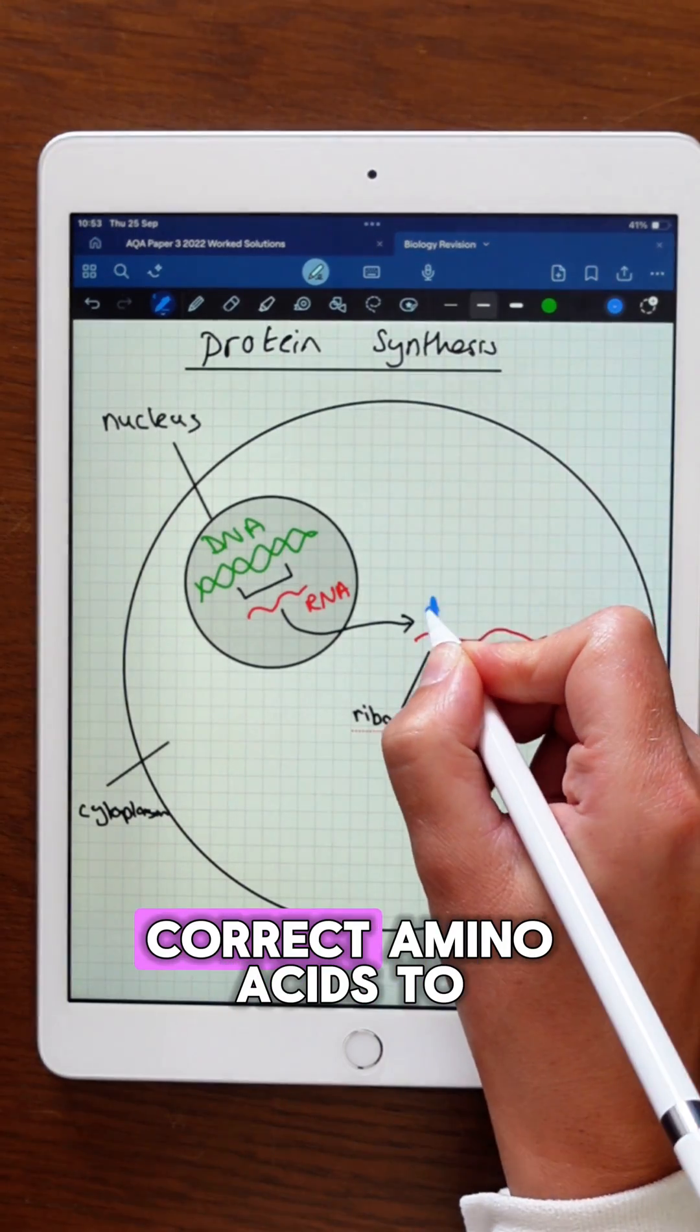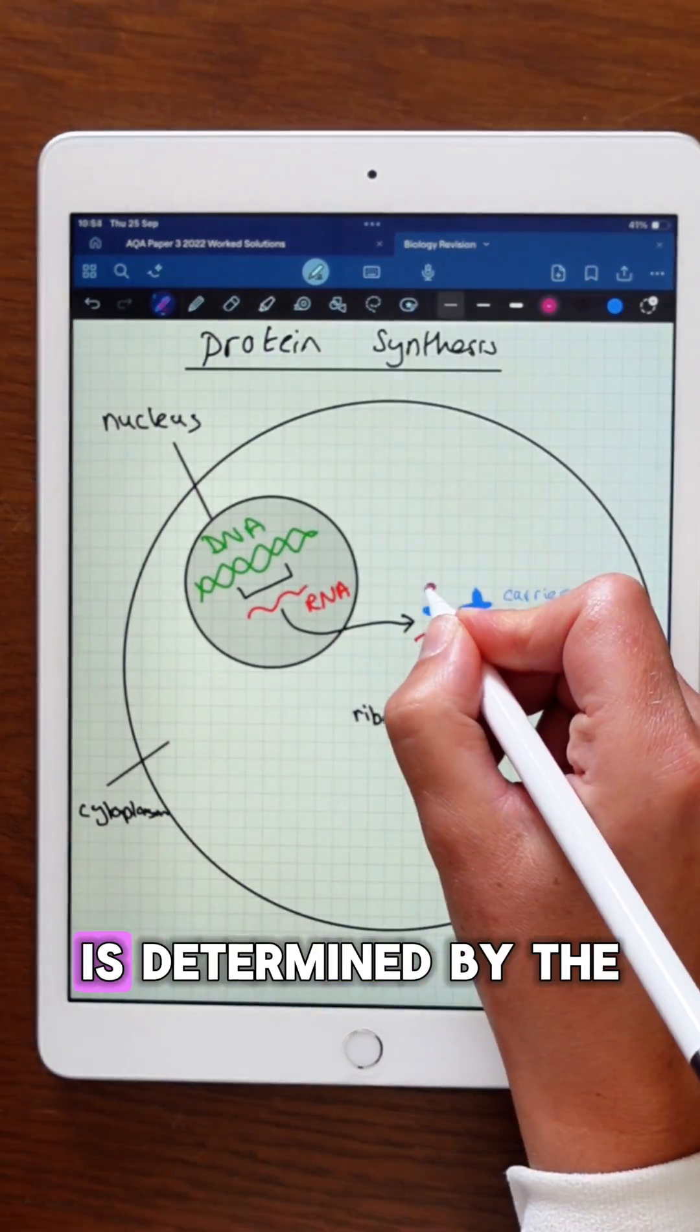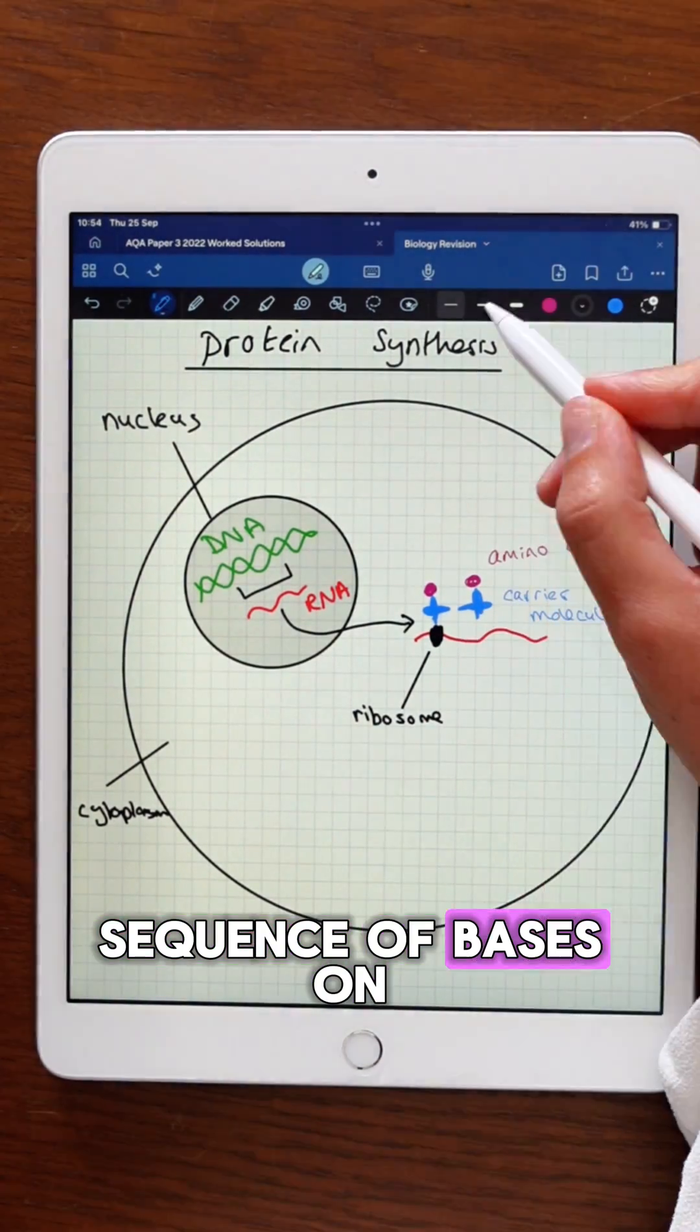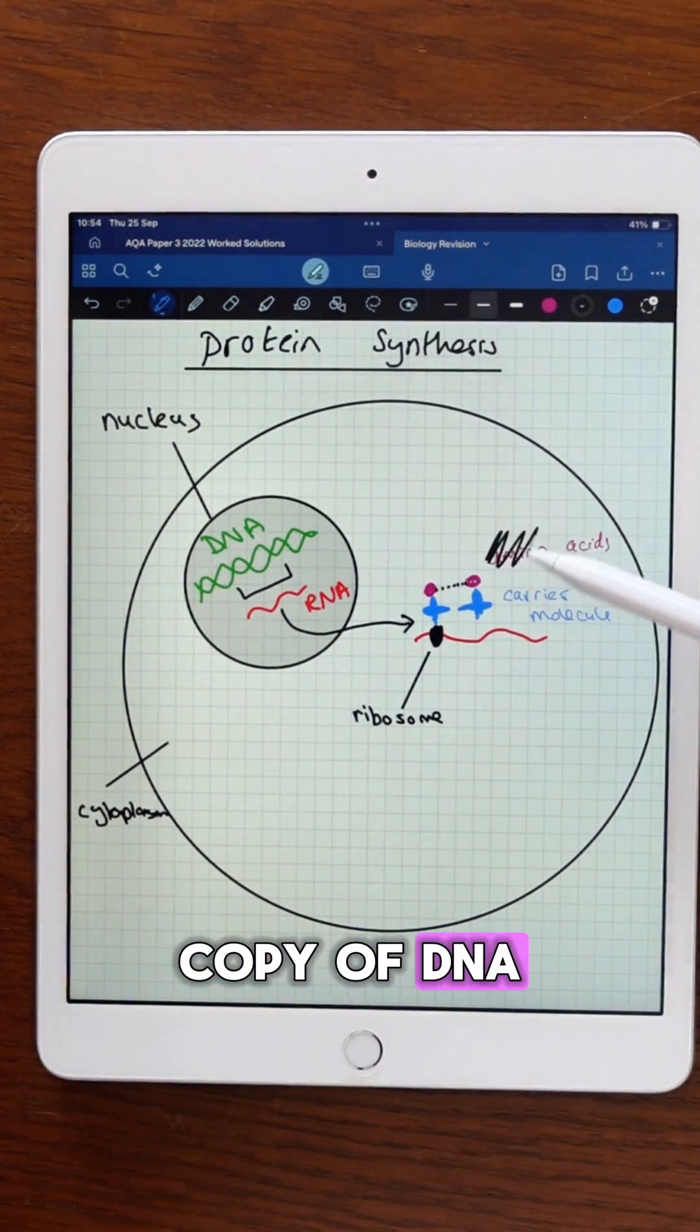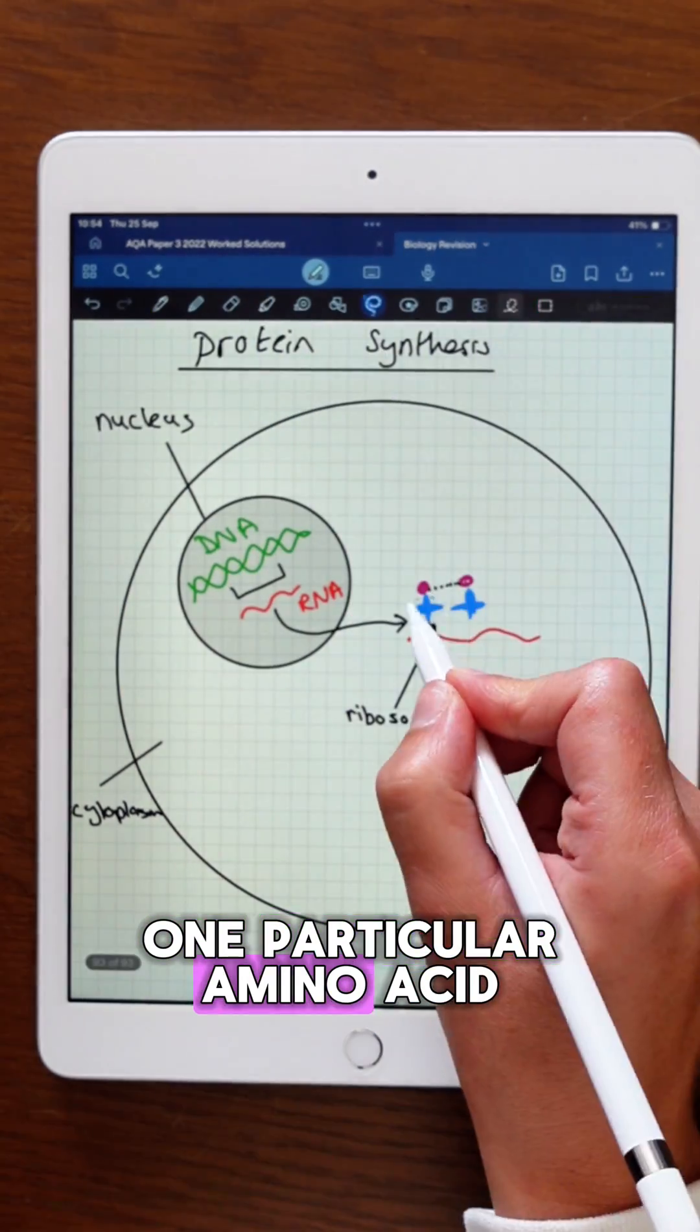Carrier molecules bring the correct amino acids to the ribosome. Which amino acid is correct is determined by the sequence of bases on the RNA copy of DNA—the triplet code. So three bases code for one particular amino acid.